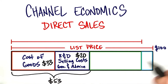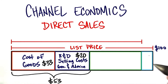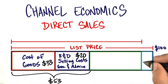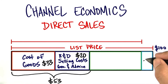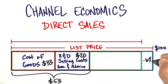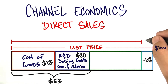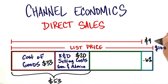Now, something we should consider is that no end user pays list price. So let's assume that this area represents a discount from the list price — let's say 10%. That means your revenue to your company would not be $100 but $90.